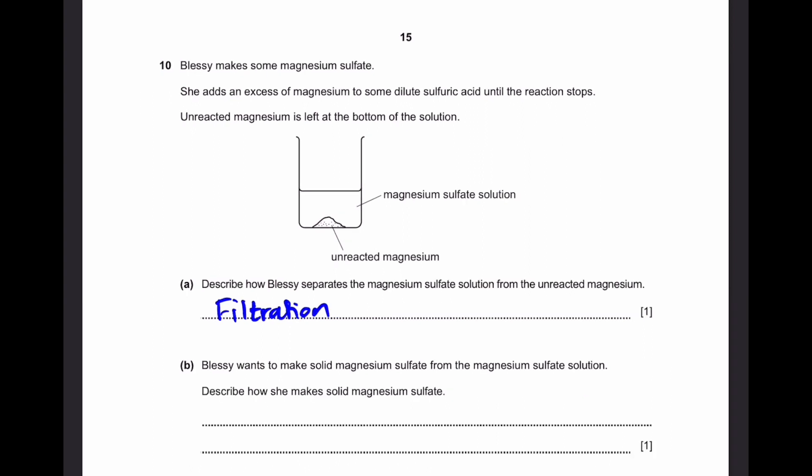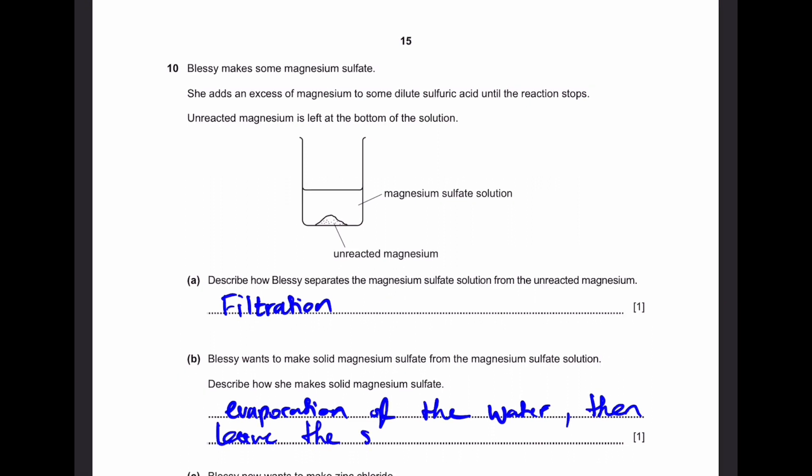Part B. Blessie wants to make solid magnesium sulfate from the magnesium sulfate solution. Describe how she makes solid magnesium sulfate. Well of course there's the process of crystallization. So you can write evaporation of the water which formed and dissolved magnesium sulfate, and then leave solid magnesium sulfate to cool.